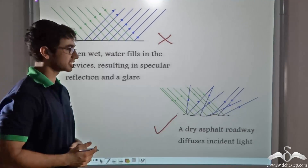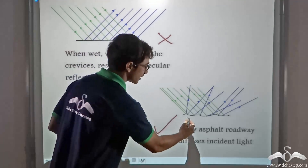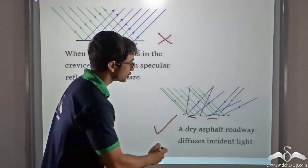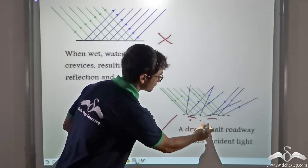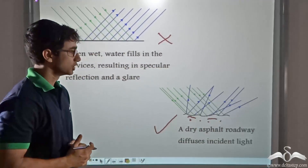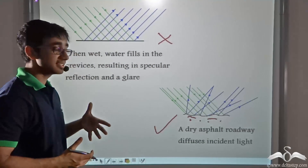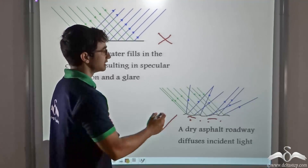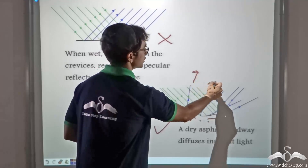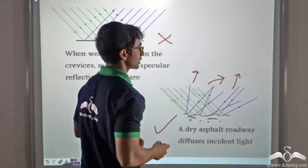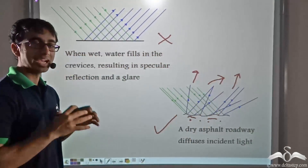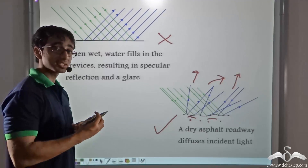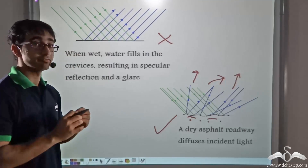A dry road is a rough surface. If we draw normals on consecutive points, they are not parallel. So parallel rays incident on the surface, after reflection, will not be parallel — these rays are scattered out in all directions. Due to this, light falling on the road scatters and is spread evenly, and thus the driver is able to see the road ahead very clearly.